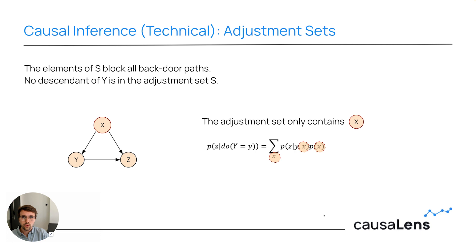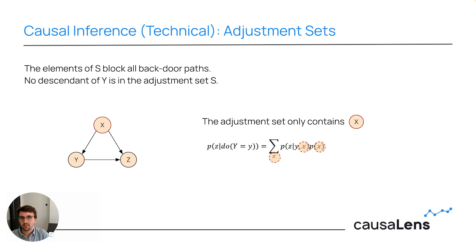This concludes the section about causal inference. In addition to the high-level overview, I've also shown you what adjustment sets are, what the backdoor criterion is, and given you an example of what backdoor paths are.